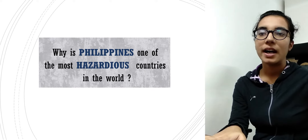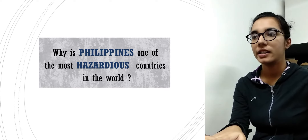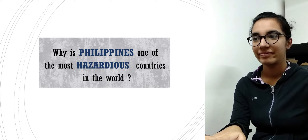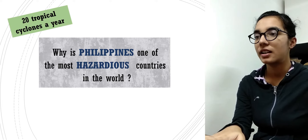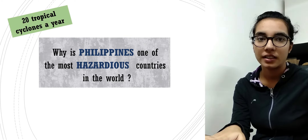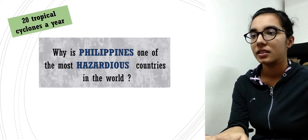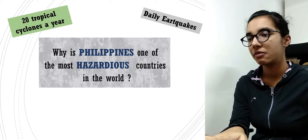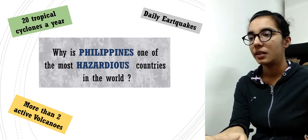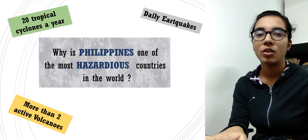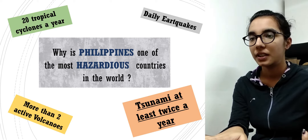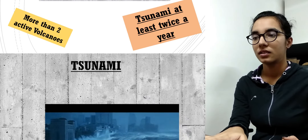Why is the Philippines one of the most hazardous countries in the world? One answer: they experience about 20 tropical cyclones a year on average. They experience earthquakes daily — whether major or minor. There are more than 20 active volcanoes, and they experience tsunami at least twice a year.